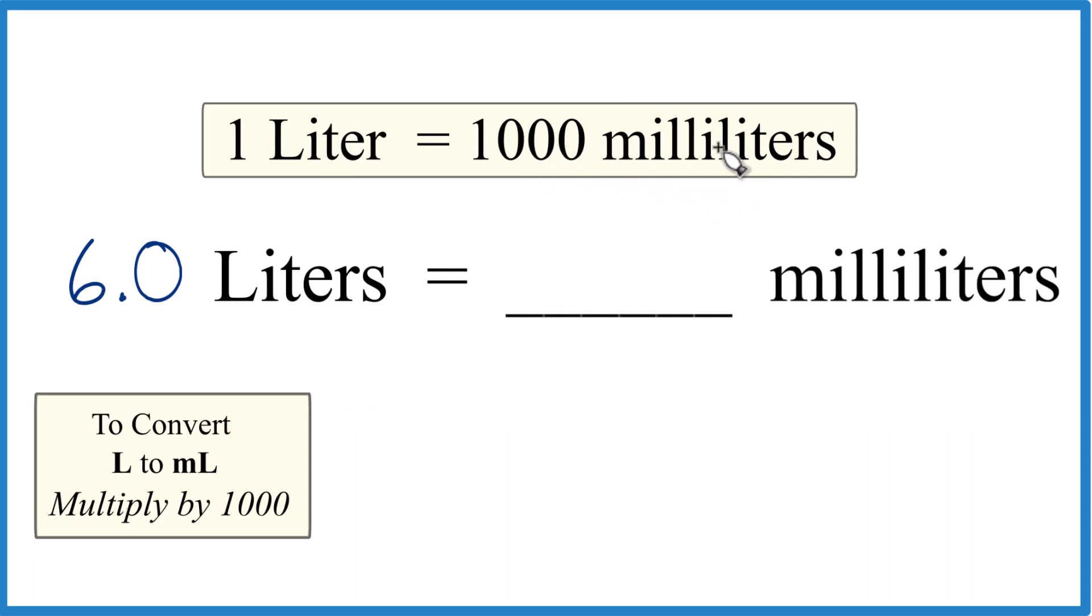So if 1 liter is 1,000 milliliters, 6 liters, well just 6 times 1,000, that would give us 6,000 milliliters.